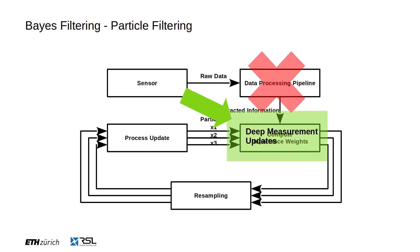In this work, we propose a novel approach, deep measurement updates, to compute importance weights directly from raw sensor data. This eliminates the need for creating problem-specific sensor data processing pipelines and heuristics.